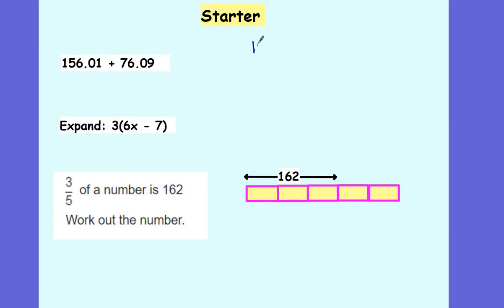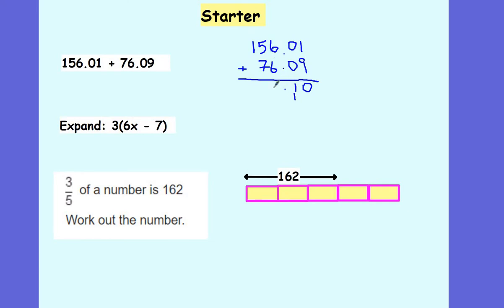Let's go through the answers. So if I'm adding 156.01 plus 76.09, making sure I line up my columns correctly. I've then got 1 plus 9 gives me 10. 0 plus 0 plus 1 gives me 1. 6 plus 6 gives me 12. 7 plus 1 gives me 8, plus 5 gives me 13. And 1 plus 1 gives me 2.